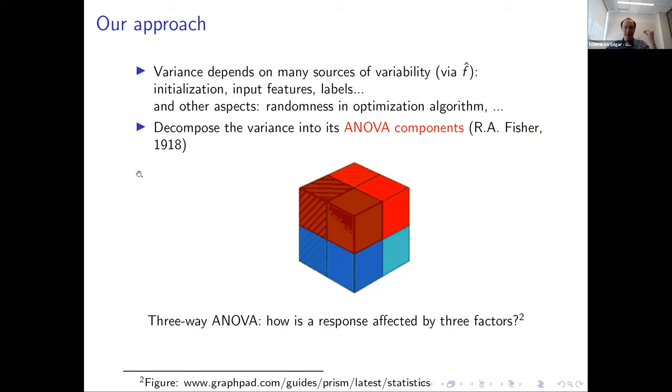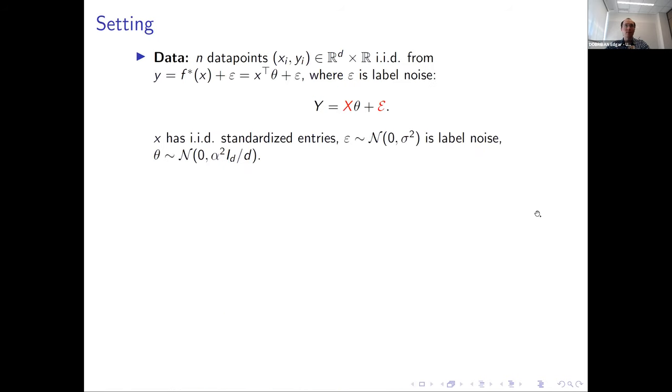It turns out there is a classical idea in statistics called ANOVA, the analysis of variance, which is at least 100 years old, and that's what we propose to use here. I'll explain how that works next. But we don't just propose this at a very high level—we also work out examples of some random features models to actually calculate these various components.